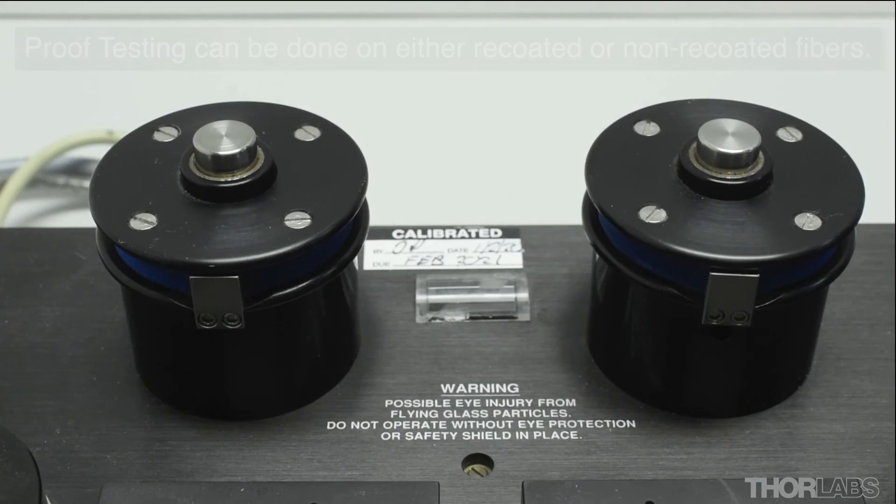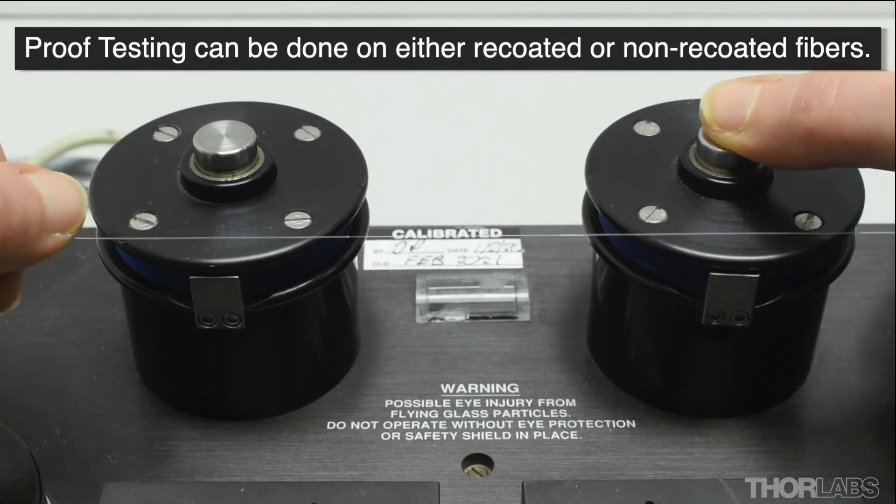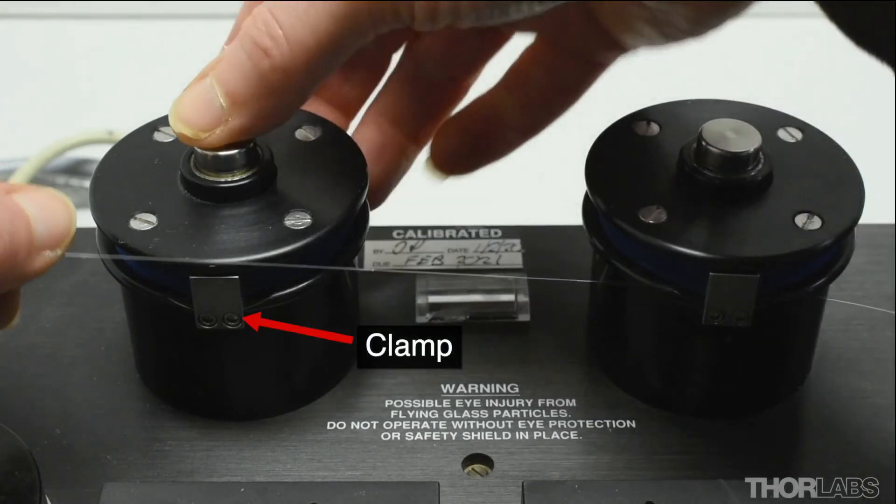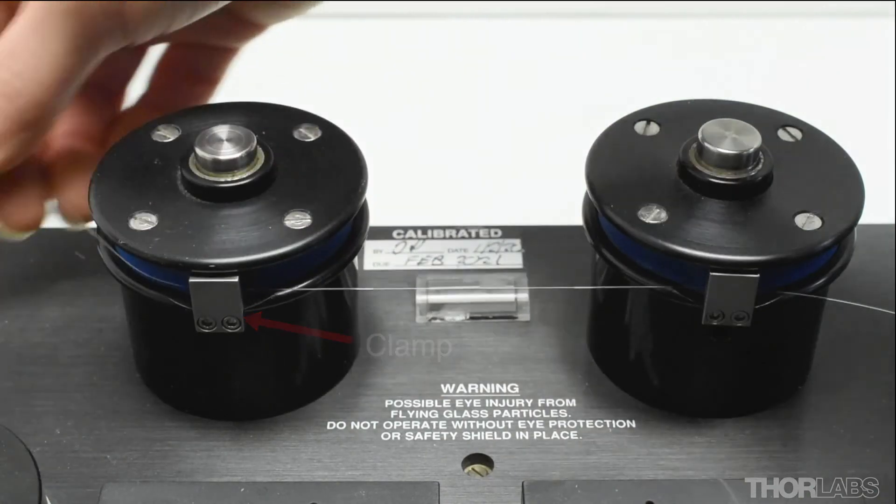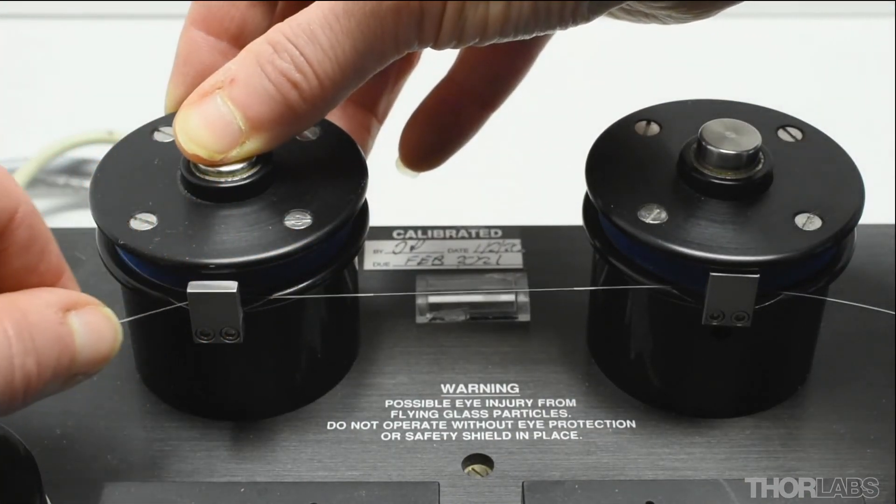To load the fibre onto the proof tester, first roughly position the splice region centrally between the two mandrels. Pressing the release button on the top of the mandrel moves the clamp forwards. Place the fibre between the clamp and the rubber grip on each mandrel.